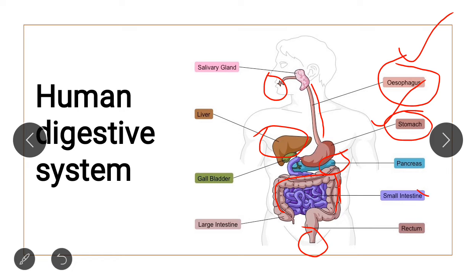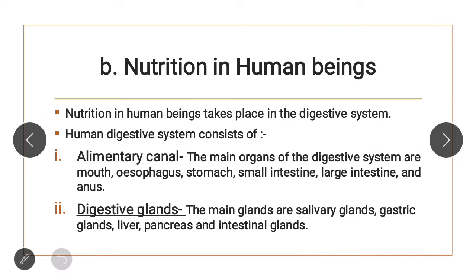The digestive glands are: salivary glands present in the mouth, liver which secretes bile, gallbladder which stores the bile, pancreas which secretes pancreatic juices, gastric glands present in the stomach, and intestinal glands. So the alimentary canal consists of mouth, esophagus, stomach, small intestine, large intestine, and anus, while the digestive glands consist of salivary glands, gastric glands, liver, pancreas, and intestinal glands.